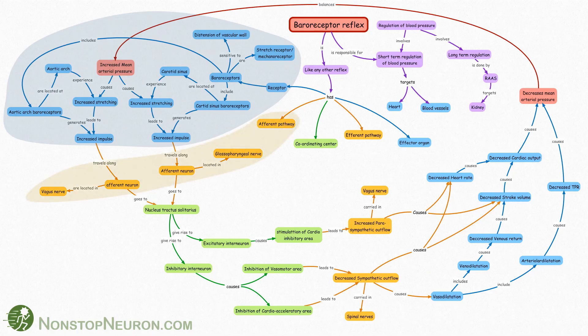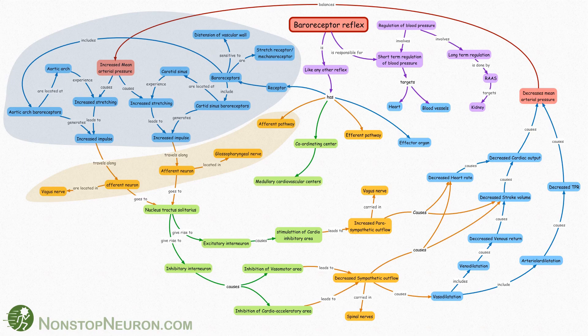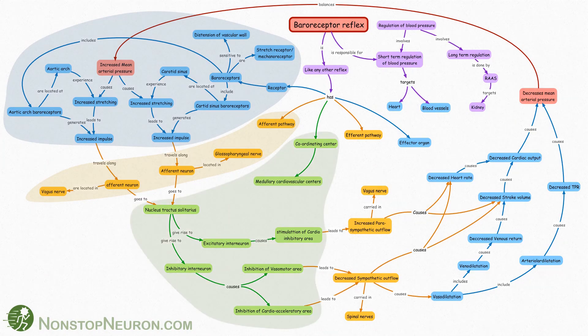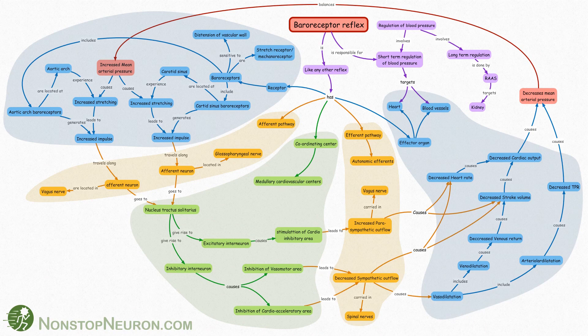Here we have afferent pathway that includes glossopharyngeal and vagus nerve. Coordination centers are medullary cardiovascular centers shown in this area. Efferent pathway involves autonomic efferents. And finally, effector organs are heart and blood vessels as shown in this area.